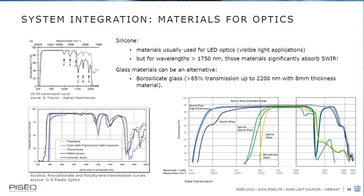Regarding integration of these light sources in SWIR systems, materials used for optics are important. Optics are used to shape the beam and protect the light source. In visible light applications, silicone is widely used, but it doesn't fit well for SWIR: at 1,750 nanometers, silicone starts to significantly absorb SWIR radiation. Alternatives must be found for longer wavelengths; glass materials are a good alternative.